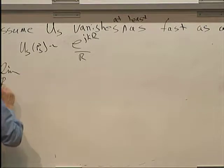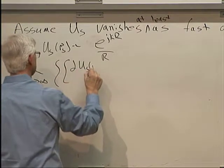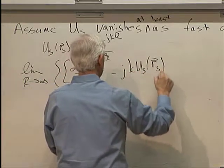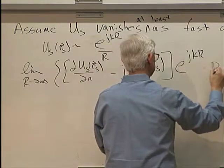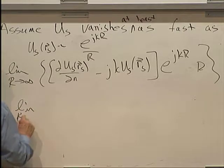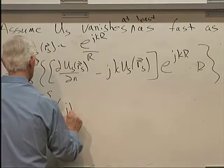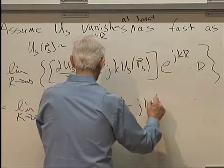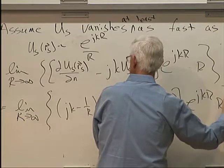What is that? Well, that's the limit as R approaches infinity of, we've done this partial enough times, so this is just jk minus 1 over R US of RS assuming that we have the spherical wave, minus jk US RS times e to the jkR times R. So, these guys cancel